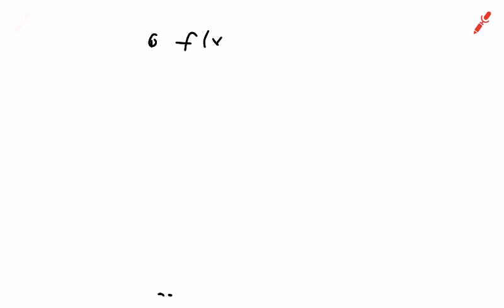I'm going to do three examples from the homework that you guys got on Friday. The first example is number one, which says f of x equals negative 8x squared minus 10x minus 6. They give us two points: x equals 11 and x equals 1, and this is supposed to be a secant line. They're asking for the equation of the secant line.